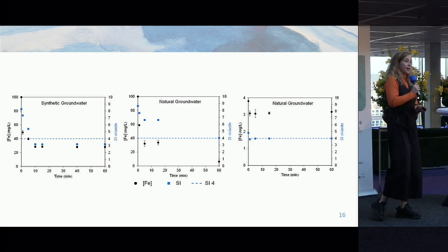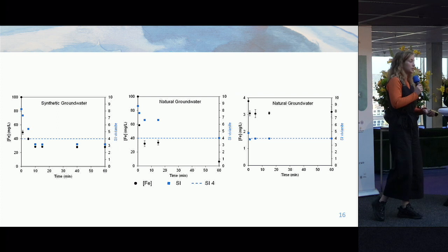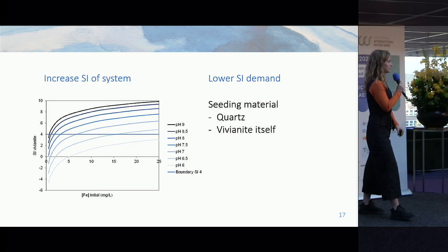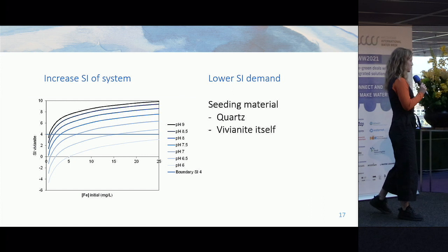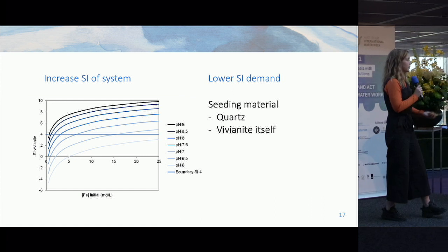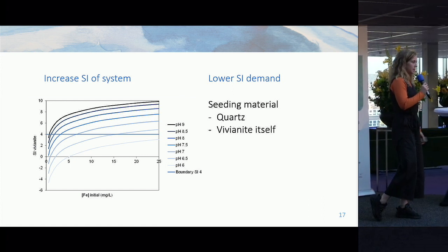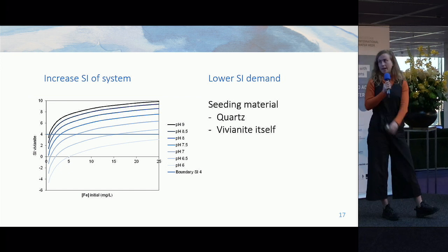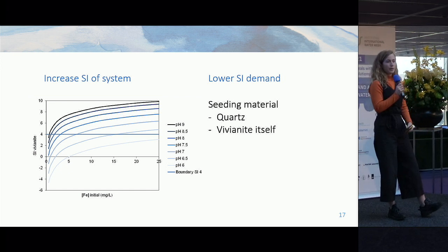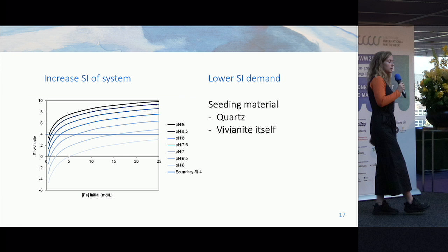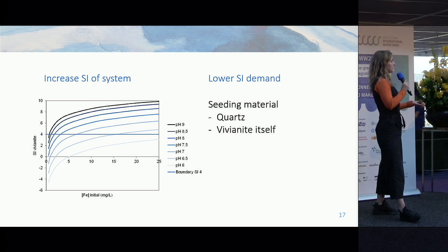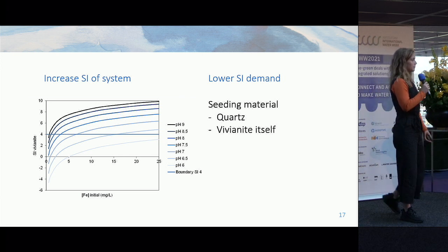To enhance the removal, I think there are two options. We can either increase the saturation index of the system by increasing the pH, or we can lower the saturation index demand by, for example, adding a seeding material such as quartz — or maybe vivianite itself can also function as a seeding material.